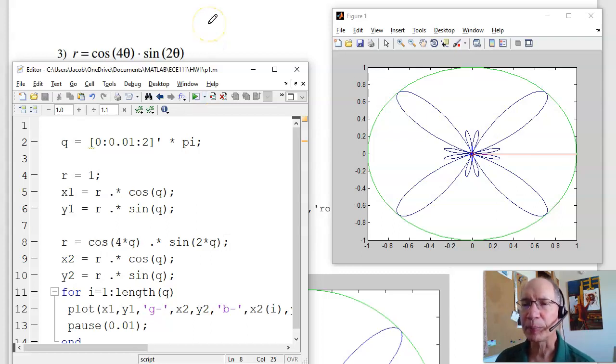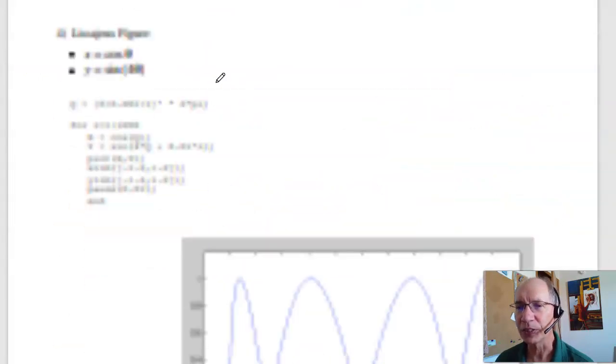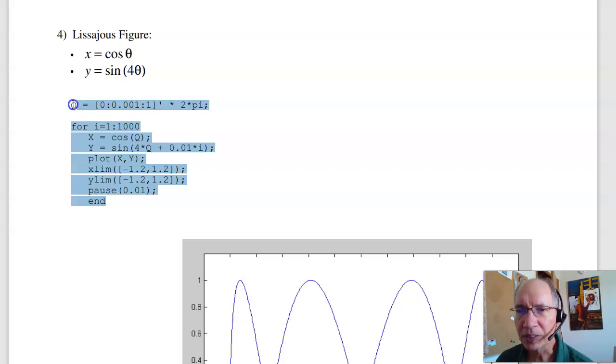So that's the first three problems. That's really just doing MATLAB scripts. If I have a script, it's really easy to modify and do a different function. Problem four is a Lissajous figure. One way to do this in MATLAB is copy-paste. If I copy all this, grab that, got it. Go over to MATLAB.